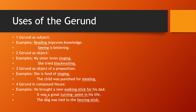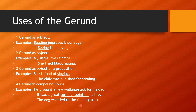Gerund in compound nouns. Examples: 'He brought a new walking stick for his dad.' 'It was a great turning point in his life.' 'The dog was tied to the fencing stick.' Walking stick, turning point, and fencing stick are all compound nouns containing gerunds — walking, turning, and fencing — formed by adding ing to the verbs walk, turn, and fence.